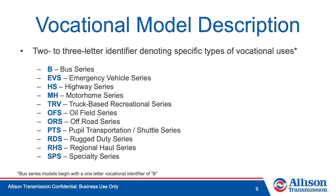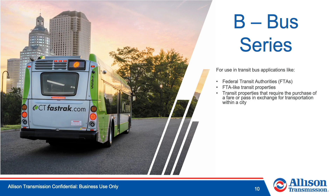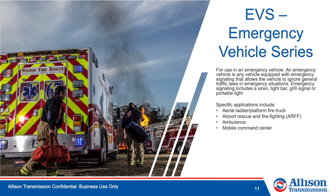Following the four-digit numerical designation, there is a two- or three-letter identifier denoting specific types of vocational uses. The exception is the bus series, where models begin with the letter B. Bus series transmissions are used in transit bus applications, like federal transit authorities (FTAs), FTA-like transit properties, and transit properties that require the purchase of a fare or pass in exchange for transportation within a city. The emergency vehicle series is for use in any vehicle equipped with emergency signaling — including a siren, light bar, grill signal, or portable light — that allows the vehicle to ignore general traffic laws in emergency situations. Specific applications include aerial ladder or platform fire truck, airport rescue and firefighting, ambulance, and mobile command center.